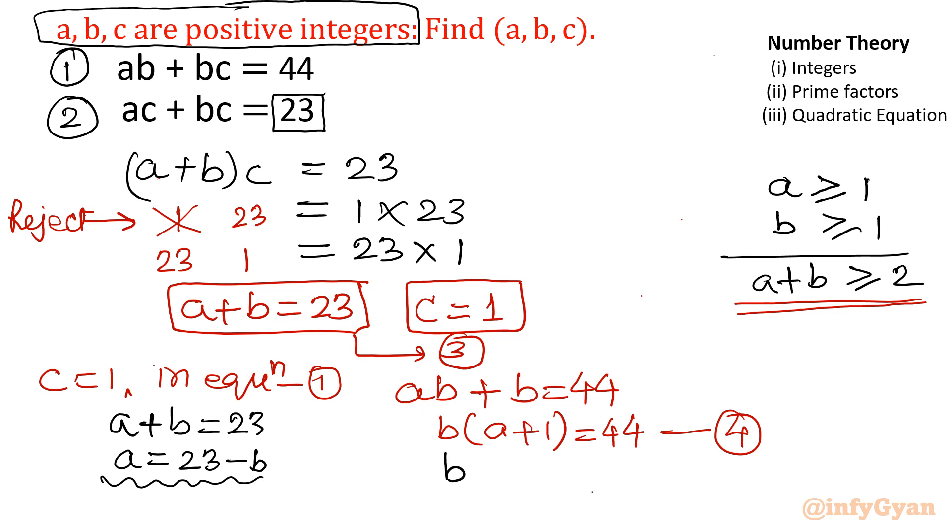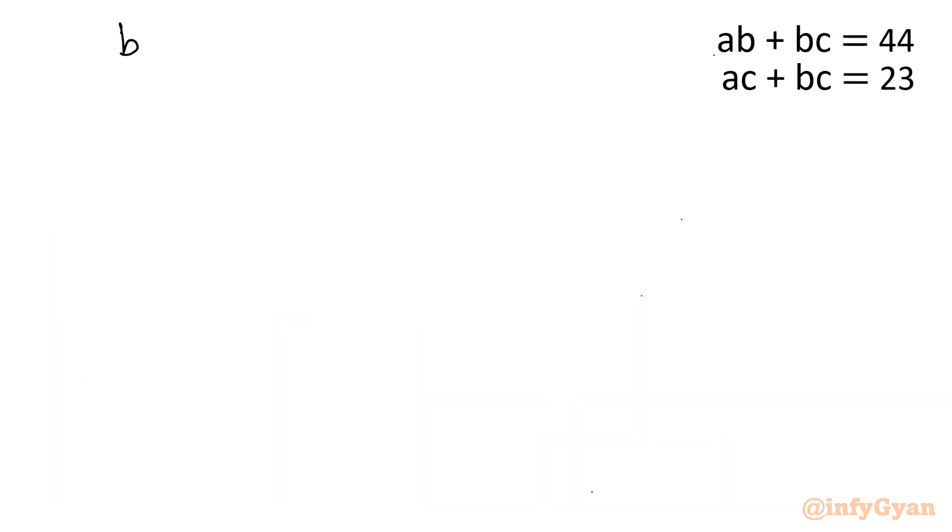So equation 4 will become (23 minus b plus 1), so b bracket (24 minus b) equal to 44. This equation we will carry for calculation. So b times 24 minus b equal to 44. Open this bracket: 24b minus b squared is equal to 44. Take all the terms to the right side. So b squared minus 24b plus 44 equal to 0. I can split 44: 2 into 22.